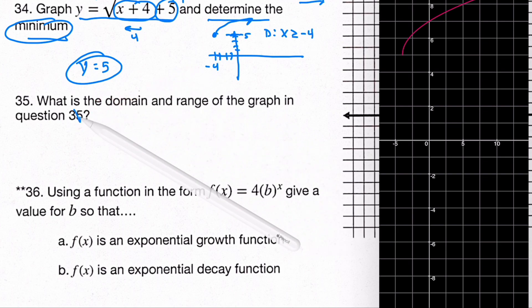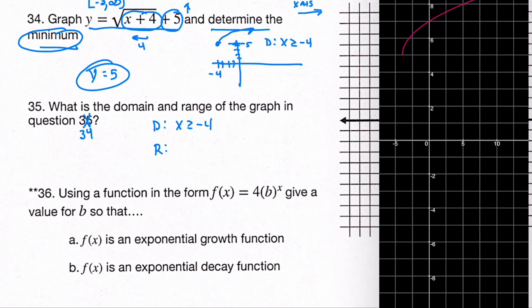There we go. The domain I guess I already discussed that, x is greater than or equal to negative 4, but the range we haven't discussed. Well we know the lowest, or rather the lowest y value it goes to is 5.